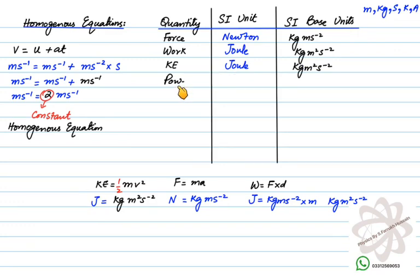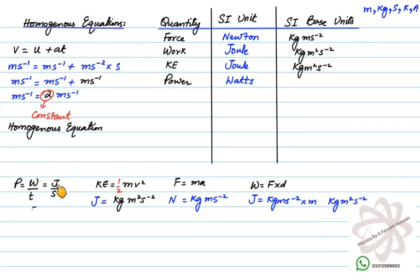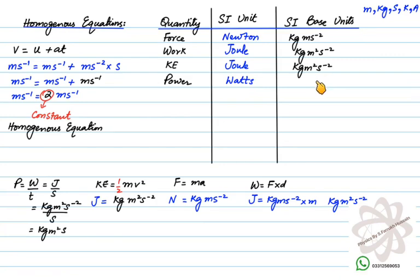For power, the SI unit is watts. Power = work done per unit time, which can also be written as Joule per second. Substituting kg m²s⁻² for Joule and dividing by seconds gives kg m²s⁻³ as the SI base unit of power.